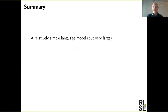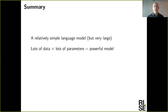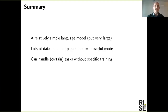To wrap up this first overview: what we're talking about is a language model, relatively simple with regards to the training objective, but enormous. What we see in the paper and in published examples online is that when you train a language model on this scale — a lot of training data and a lot of parameters — you end up with a very powerful model. Interestingly, you are able to use this model to solve a large number of specific tasks without actually training it to perform them.